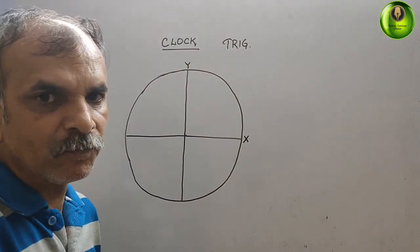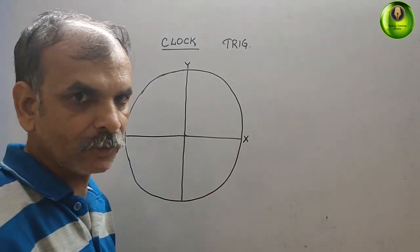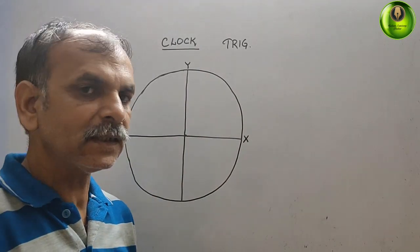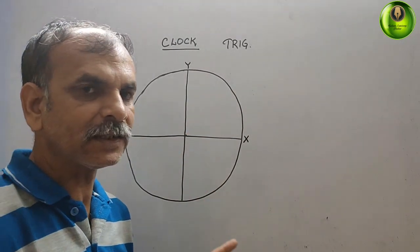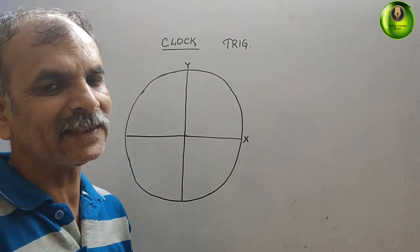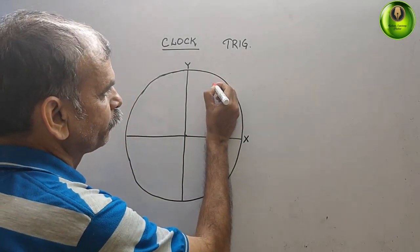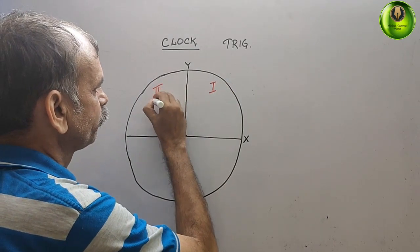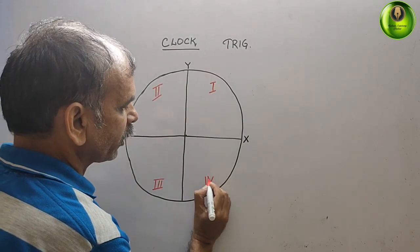Now understand this: the first is your first quadrant. Quadrant means if you divide a circle into four parts, it will form 90 degrees at the center — that's why we call it a quadrant, a sector which forms 90 degrees at the center. So this is your first quadrant, this is your second quadrant, this is your third quadrant, and this is your fourth quadrant.